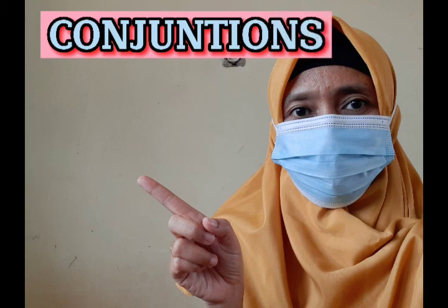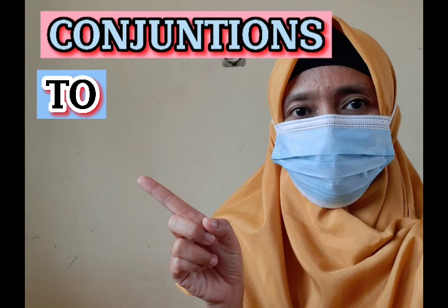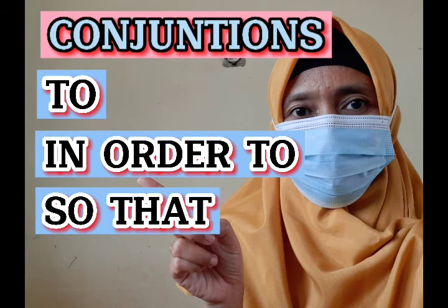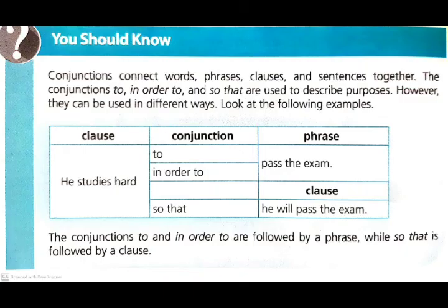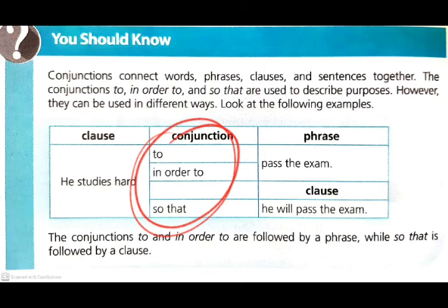Hello everybody, today we are going to learn about conjunctions: to, in order to, and so that. Conjunctions connect words, phrases, clauses, and sentences together. The conjunctions to, in order to, and so that are used to describe purposes. However, they can be used in different ways.